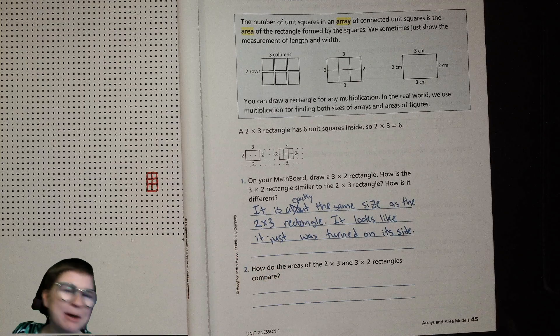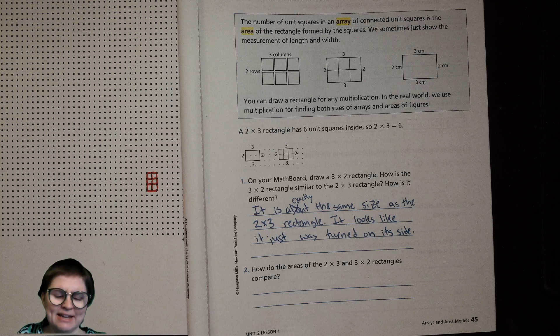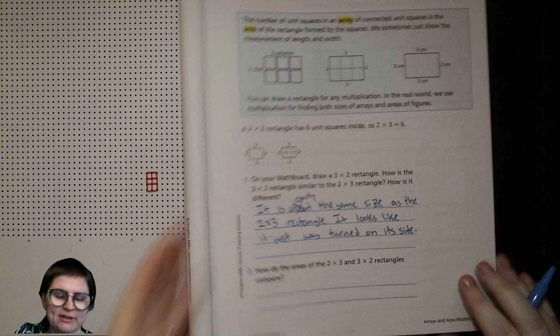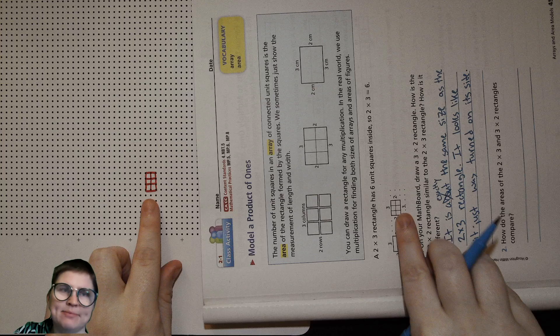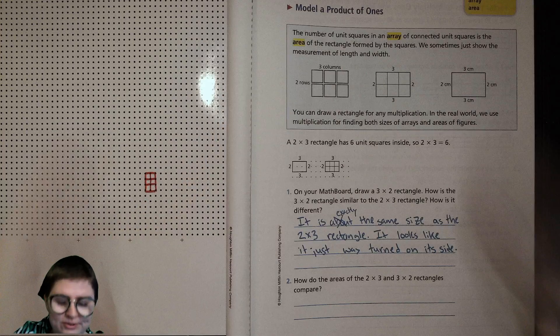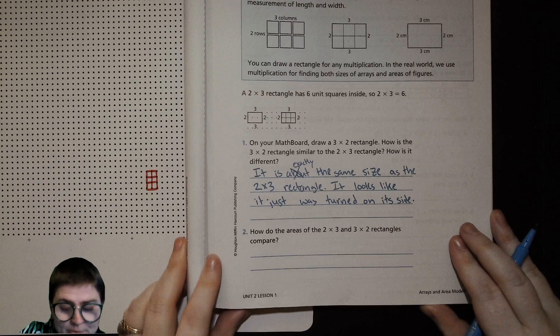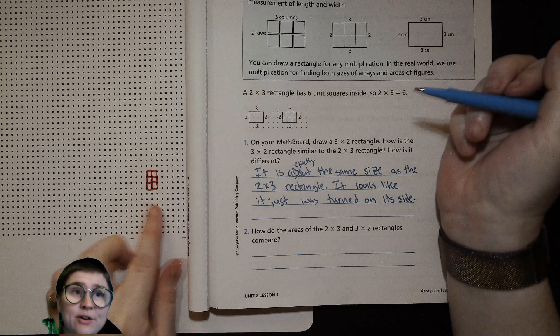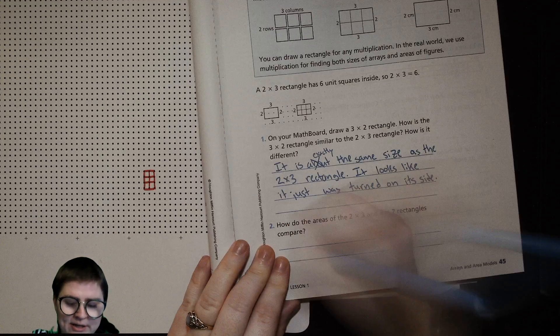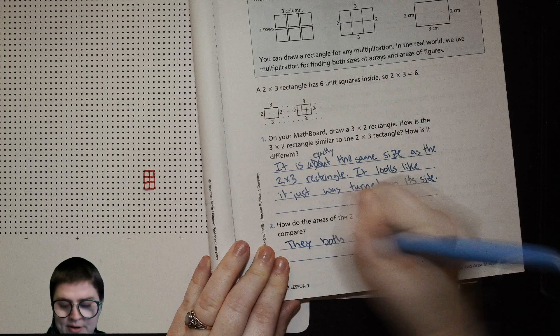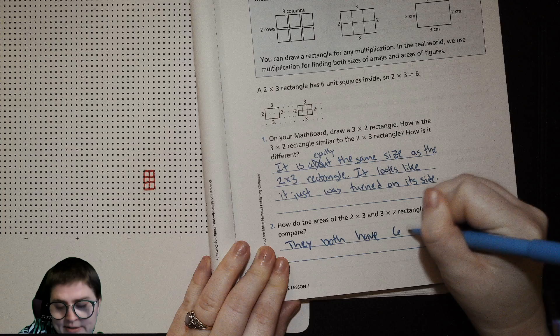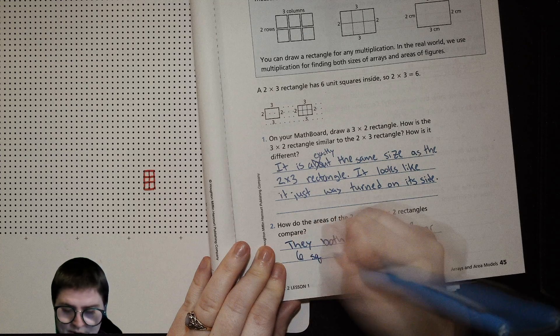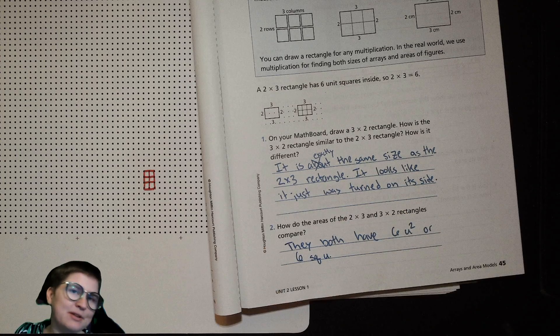I was about to write it's about the same size, but then I thought wait a second, it is exactly the same size as the two by three rectangle. It just looks like it's been turned on its side. So if we take the paper turn it this way, these look exactly the same. They're the same size. How do the areas of two by three and three by two rectangles compare? Well, this one has six square units and this one also has six square units, right? So they both have six units squared.